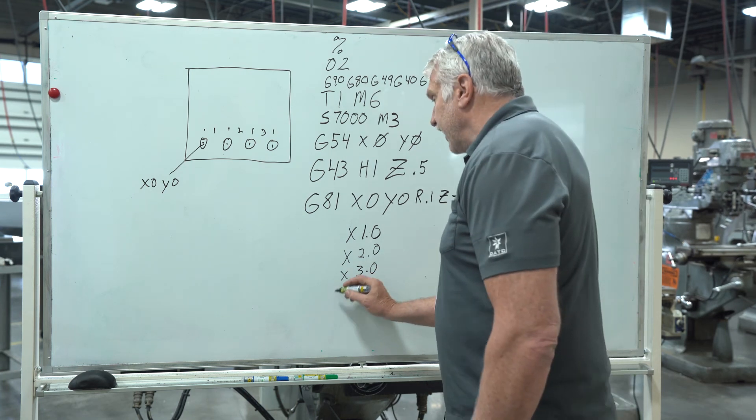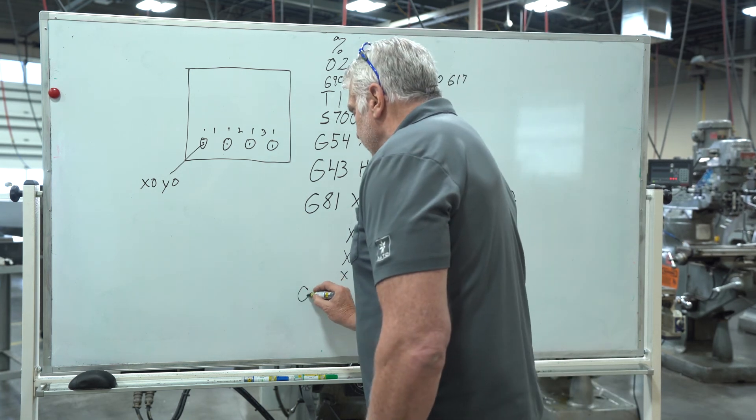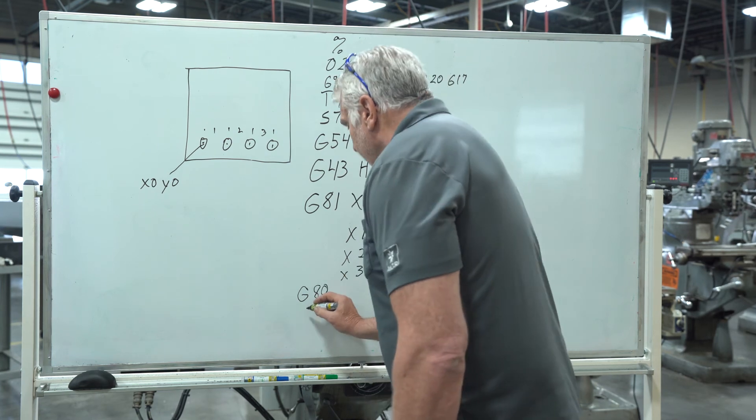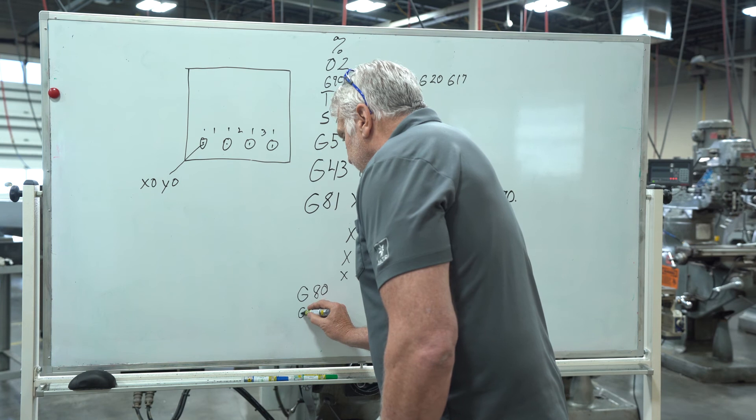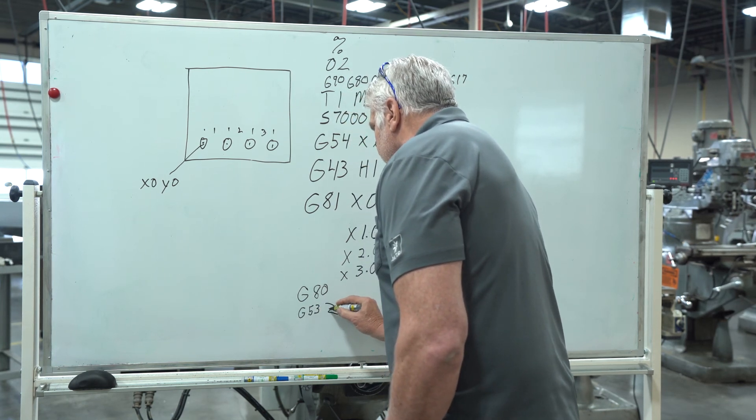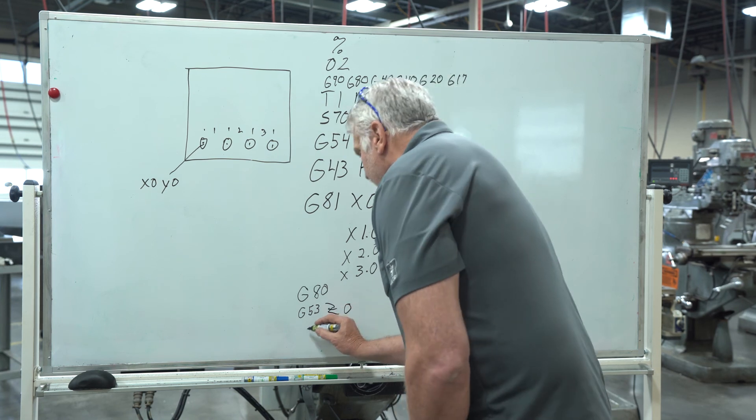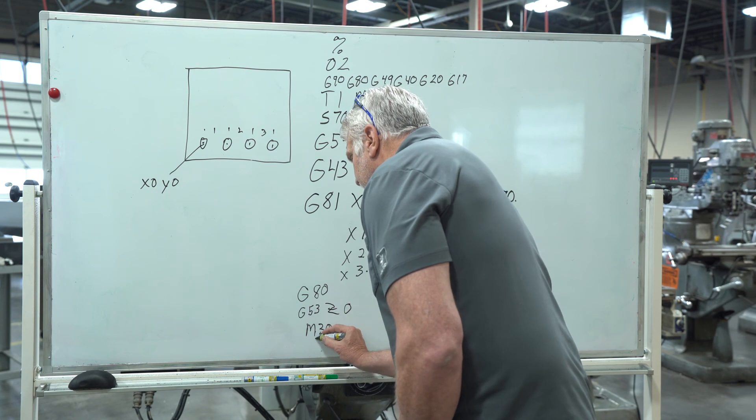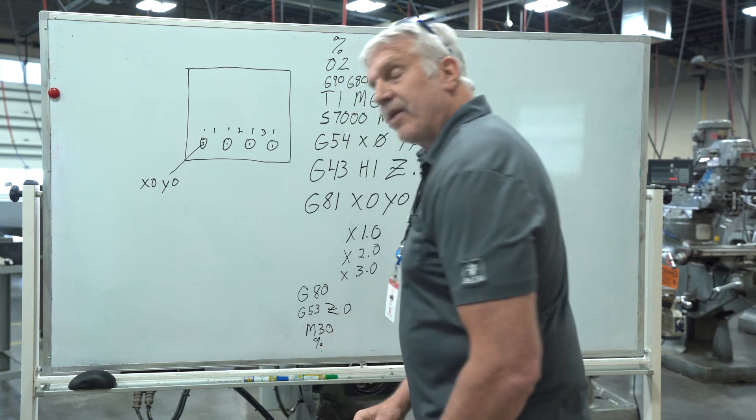The last thing I want to do is cancel my CAN cycle which is a G80. Then I'm going to go to my G53, Z0, M30, end of program, rewind to the beginning. There we go. That's it.